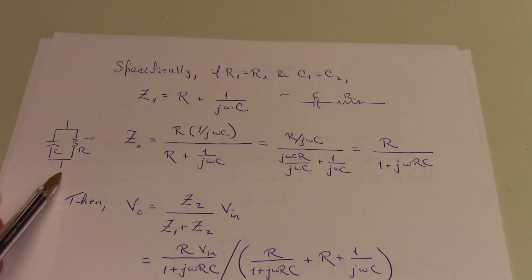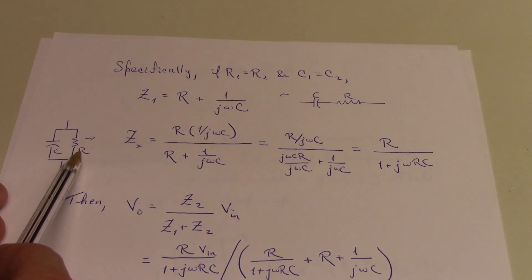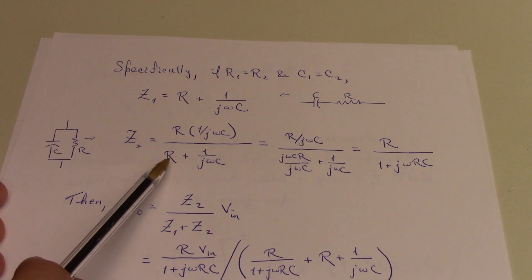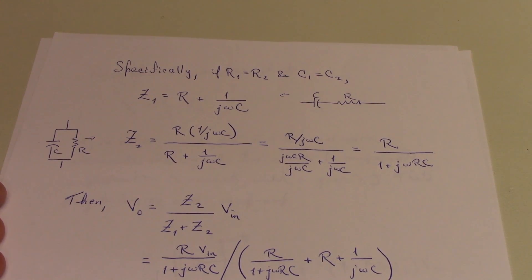The parallel branch of the circuit, this parallel RC combination, is a little bit more complicated. Z2 is going to be the product over the sum of the resistive and the reactive components. So we have R times 1 over j omega c divided by R plus 1 over j omega c.